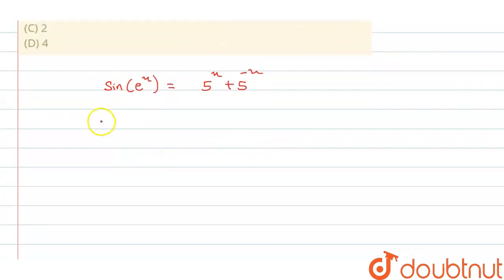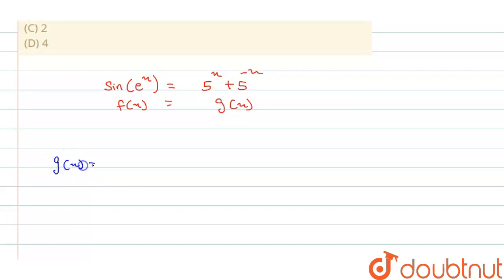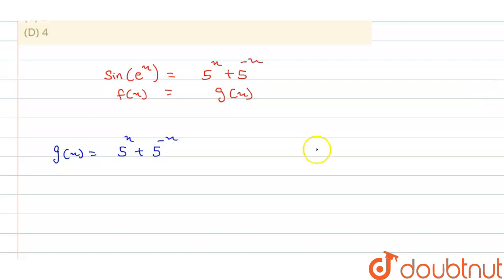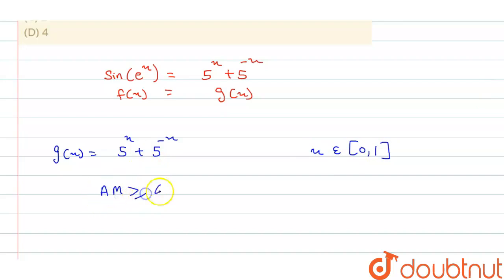So we define f(x) = sin(e^x) and g(x) = 5^x + 5^(-x). First, let's solve g(x). We are given that x belongs to [0, 1], so we can apply the AM-GM property, which states that AM is always greater than or equal to GM.